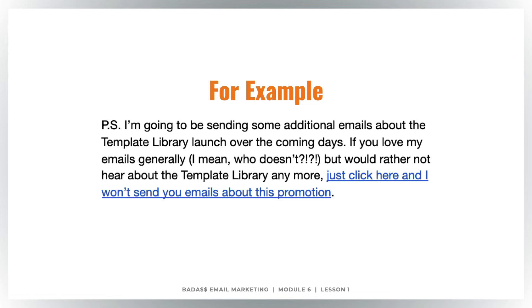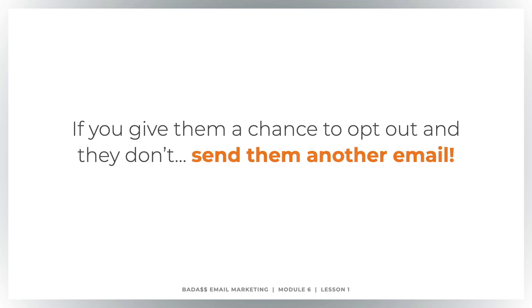Here's an example — a PS line from one of my template library launch emails. Basically I say: 'I've got more emails to come. If you love my emails but really don't want to hear about this anymore, just click here and I won't send you emails about this promotion.' It sets a tag on that person so they get excluded from future emails. If they click that button, it takes them to a landing page that says no problem, and an automation puts a tag which I then exclude from future emails. The important thing: if you give them a chance to opt out and they don't, you should feel very comfortable sending them another email, because they didn't raise their hand. So go ahead, send them another email.